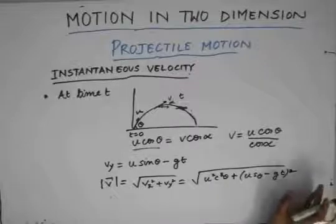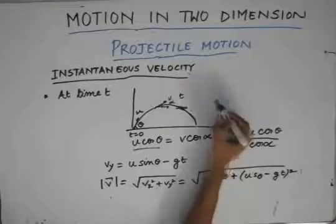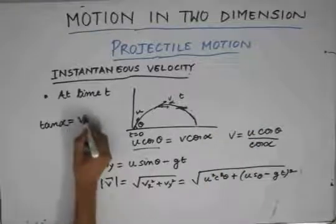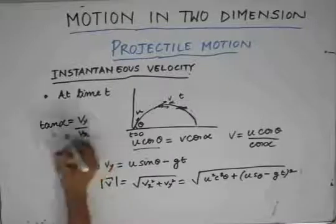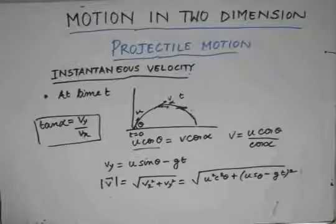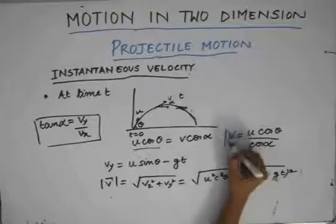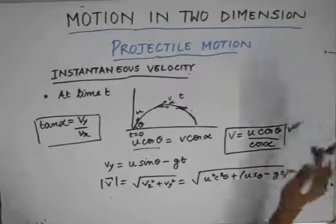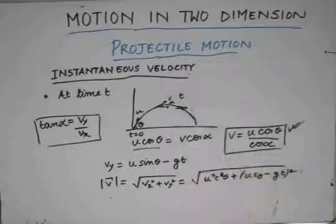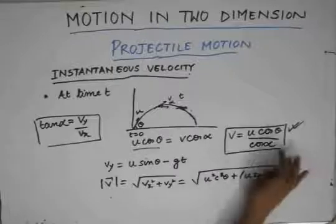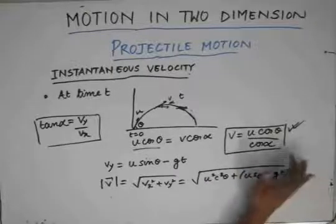The angle α is found from: tan α = vy / vx, that is, the velocity in the y direction divided by the velocity in the x direction. In competitive exams like AIEEE, this formula is very important because you need to solve many questions in a limited amount of time. It is good to remember this formula, though it is fairly straightforward.